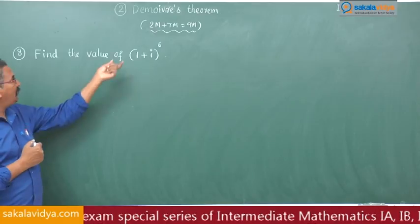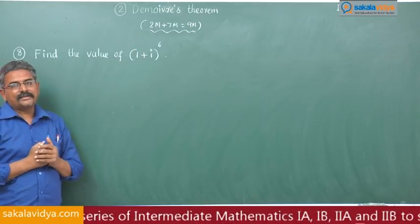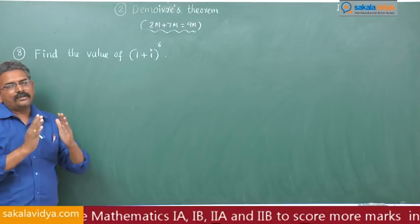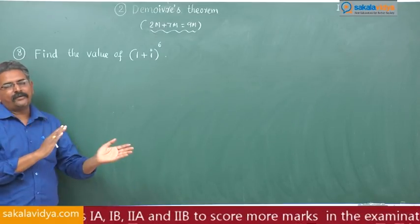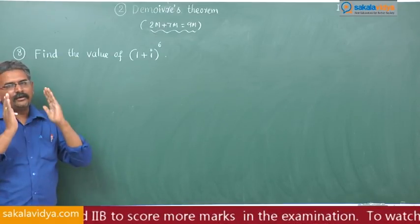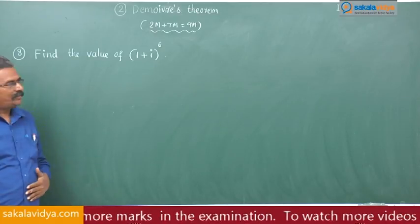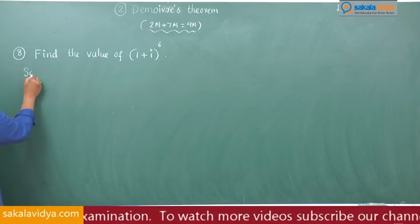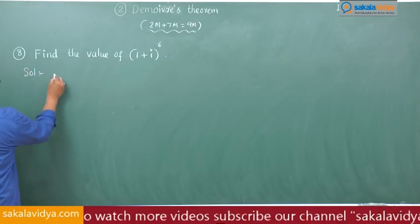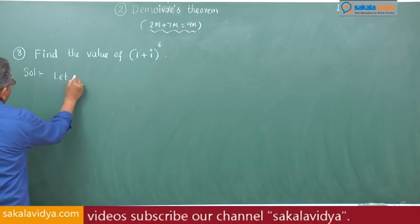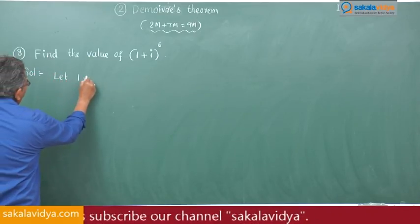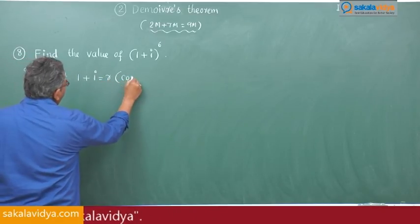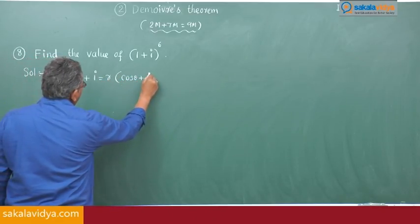In order to find the value of (1 + i)^6, the first step is to express 1 + i in trigonometric or polar form — also called mod-amplitude form. So let us consider 1 + i = r(cos θ + i sin θ).